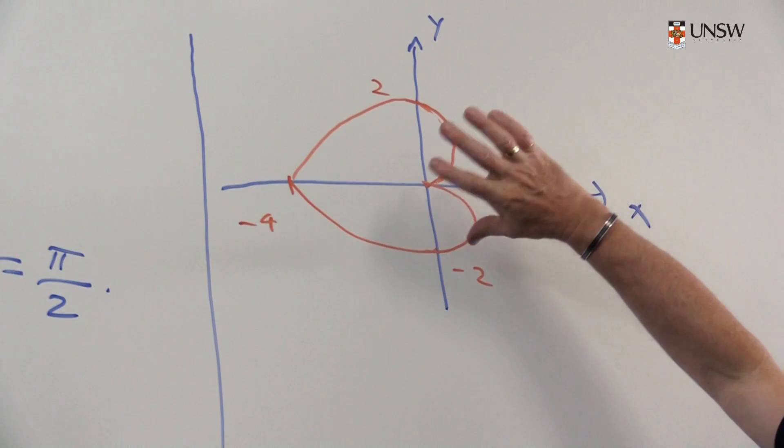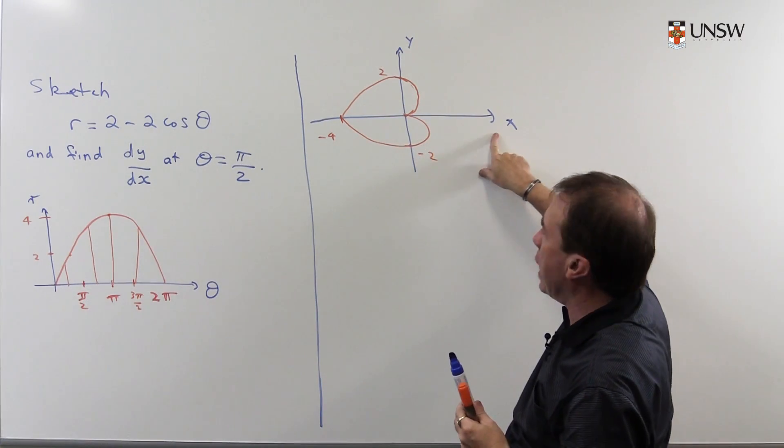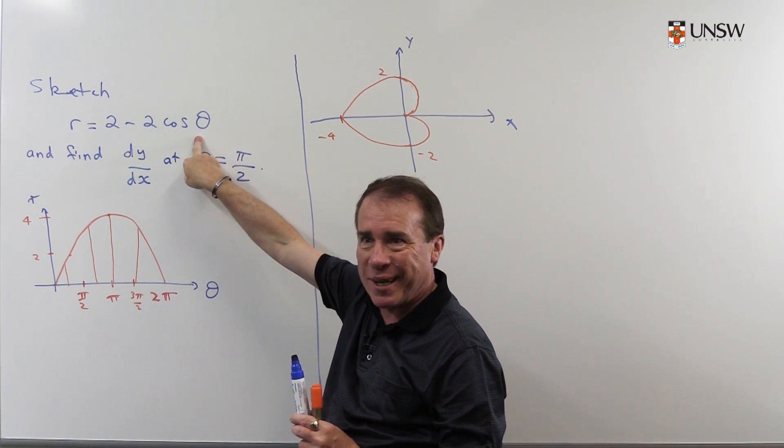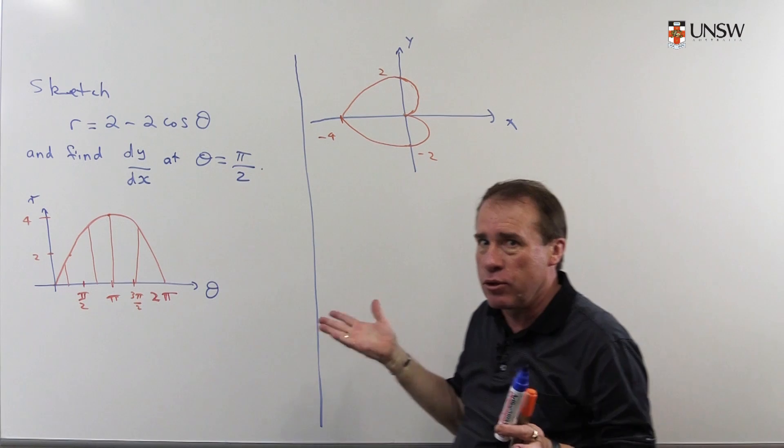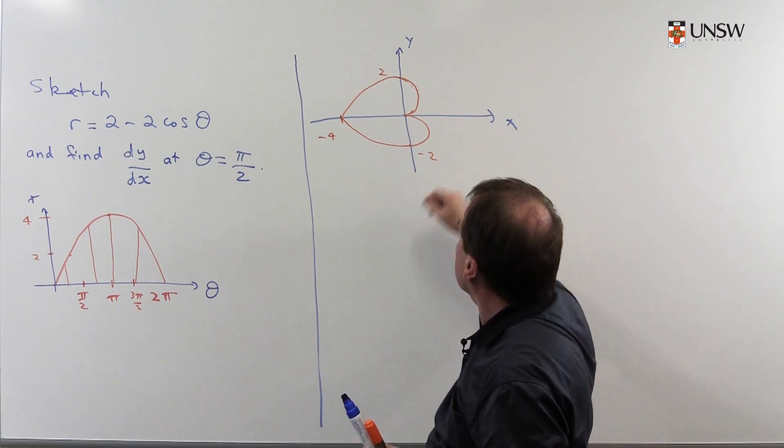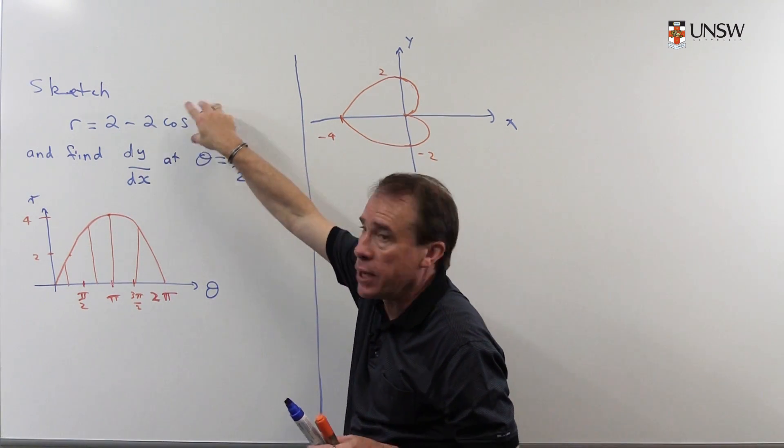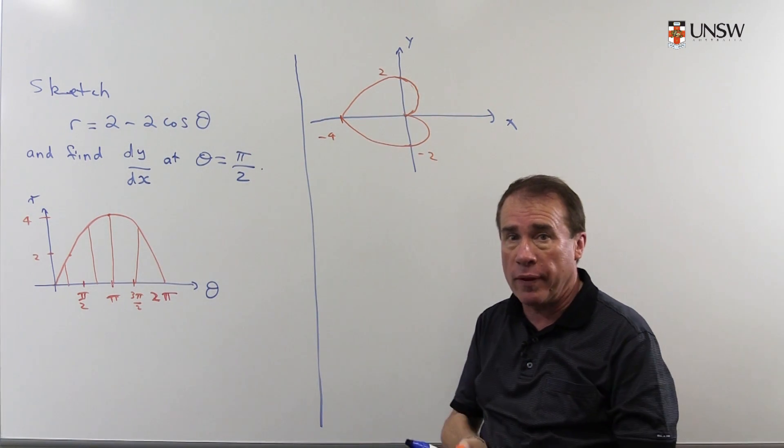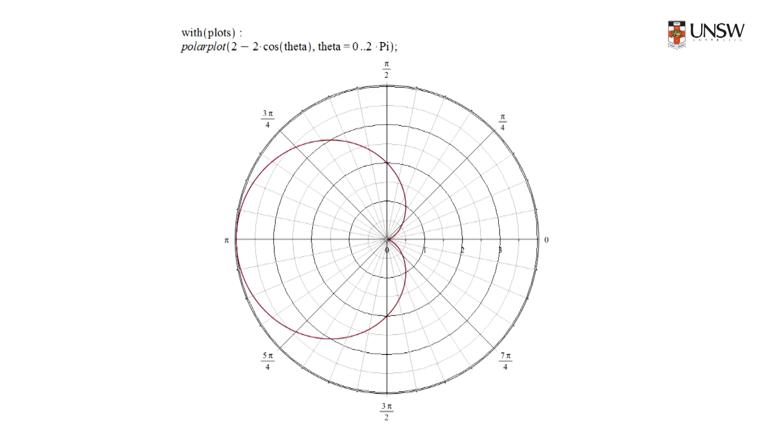And so I get a curve something like this. By the way, you can also check the symmetry around the x-axis. Notice because if you replace θ with -θ, since cos is an even function, it doesn't do anything. So replacing θ with -θ in the equation doesn't change the equation, and that tells me it's symmetric about the x-axis.